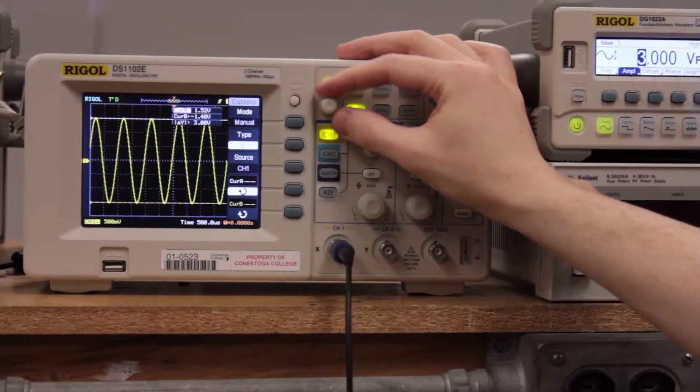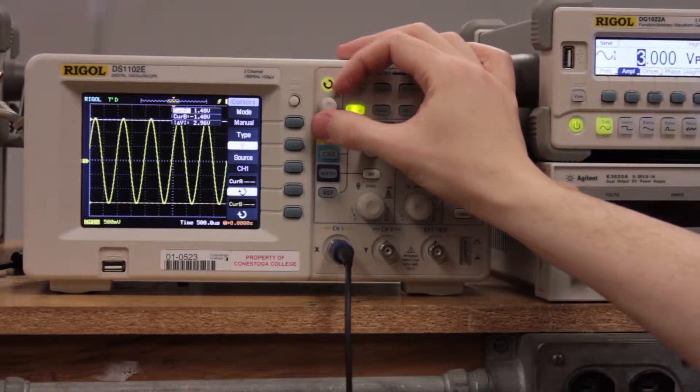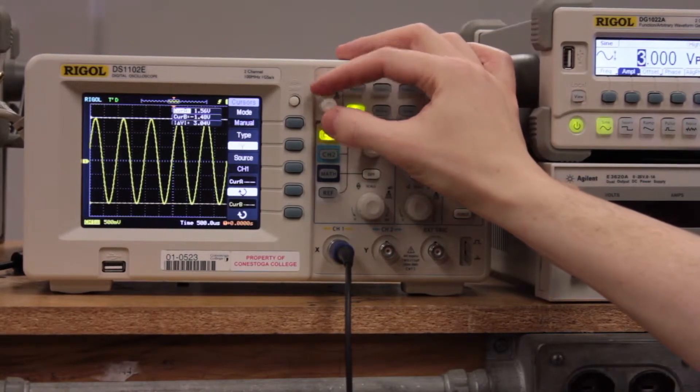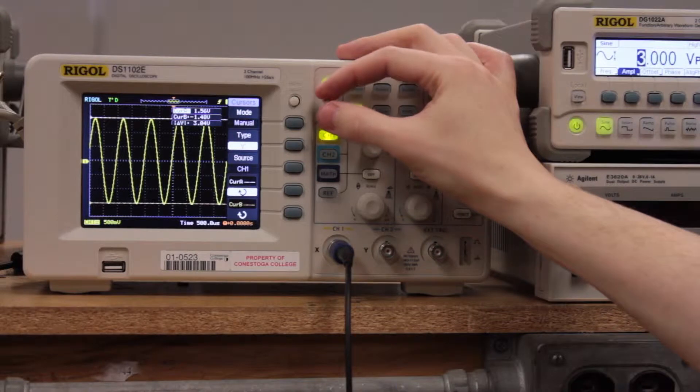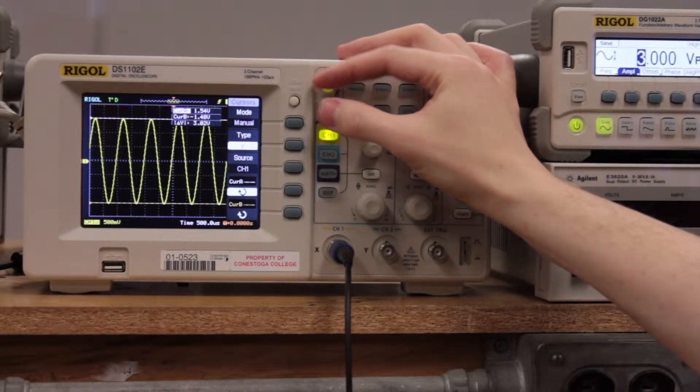Turn that off and now we can actually move these with the adjustment right here. The scope has conveniently placed these right on the edges of the waveforms.